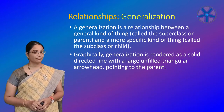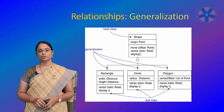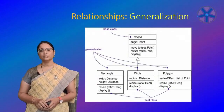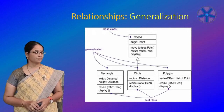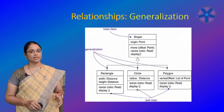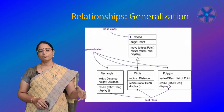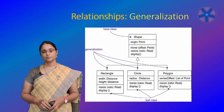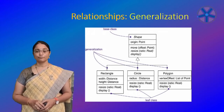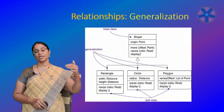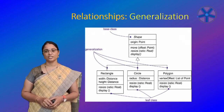Generalization is rendered as a solid directed line with a large unfilled triangular arrowhead pointing to the parent. Use generalizations when you want to show parent-child relationships. For example, shape is a generalized word; rectangle, circle, and polygon are all specializations of shape. You can represent such parent-child relationships using generalization.